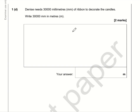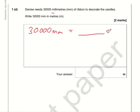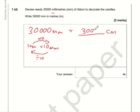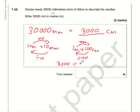I have to confess I don't know off the top of my head how many millimetres there are in a metre, although 'milli' means 1000. I do know there are 10 millimetres in a centimetre and 100 centimetres in a metre. So 30,000 millimetres divided by 10 is 3000 centimetres, and 3000 divided by 100 — chop off two zeros — is 30 metres.